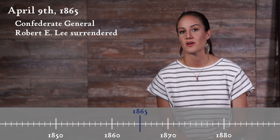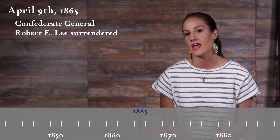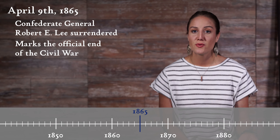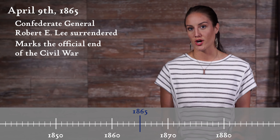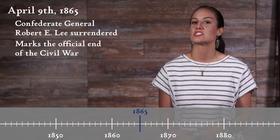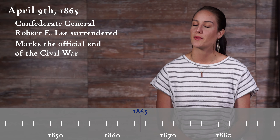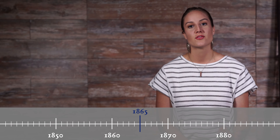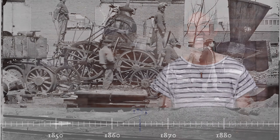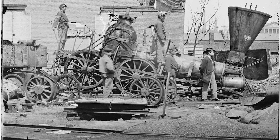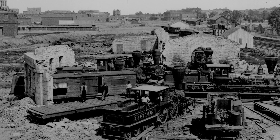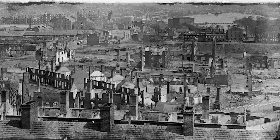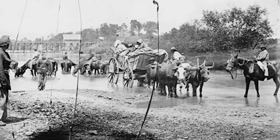On April 9, 1865, Confederate General Robert E. Lee surrendered in Virginia. At this point, the Civil War was essentially over, but this is where Reconstruction begins, and we pick up our story. At the end of the war, the South was in shambles. Infrastructure had been systematically destroyed by Union forces. Several cities had been razed or heavily damaged, and some 40% of livestock was dead.